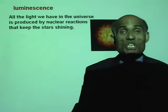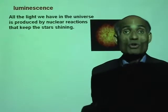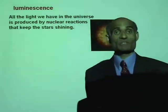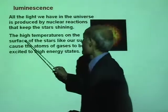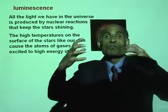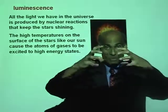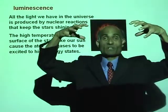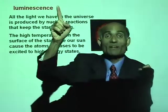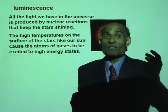Most of the energy that we get in the universe is produced at the core of stars due to nuclear reactions. As you move out from the core of the sun to the surface, the temperatures will be very high. The surface temperature of our sun is about 5,500 degrees Celsius.